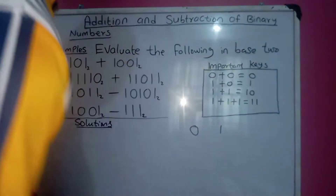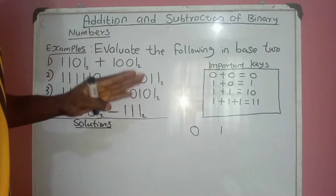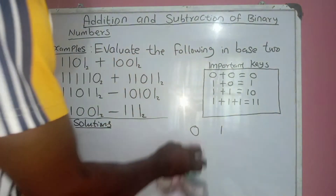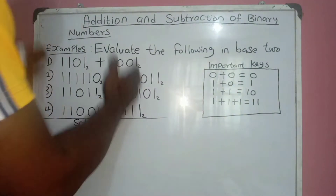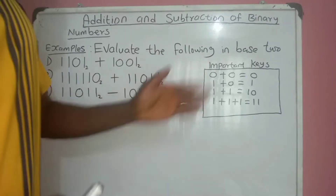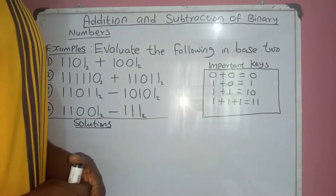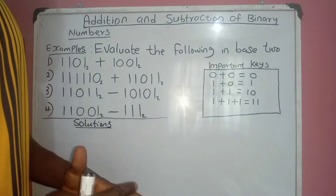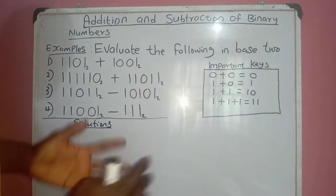Today we'll be directing our focus on binary numbers, which are called base 2 numbers. To do these additions and subtractions, we need to take note of some important keys in addition and subtraction of binary numbers.